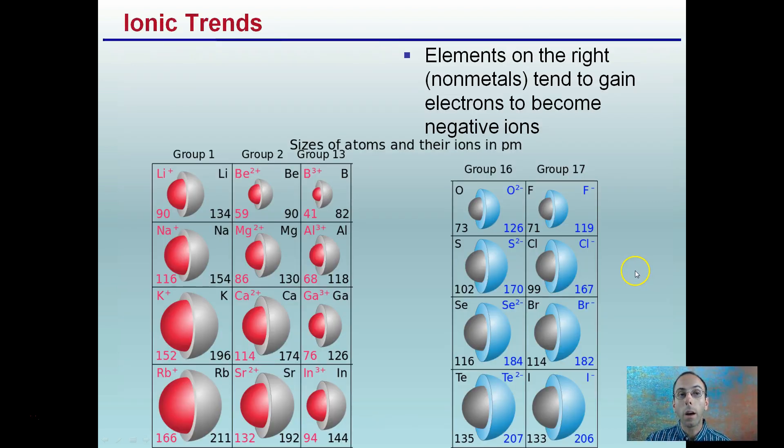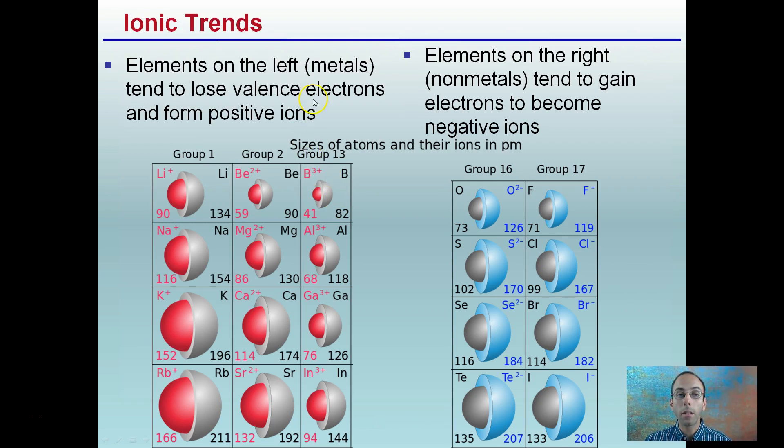So starting with ionic trends. Elements on the left, which are metals, tend to lose valence electrons to form positive ions. Remember, valence electrons are the outermost electrons. So in this image here, the gray circle represents the neutral form of the atom, and the red represents the ion form. When we're losing those valence electrons, the radius is getting smaller. Notice that the atom becomes smaller.